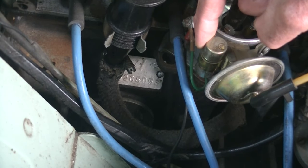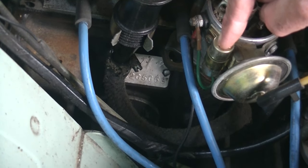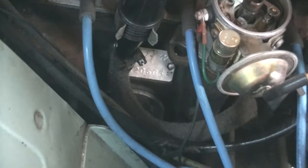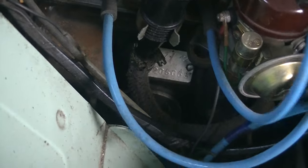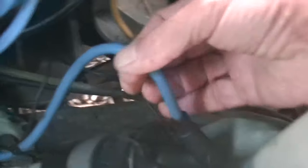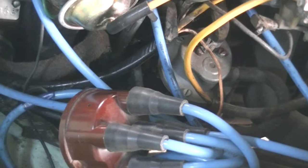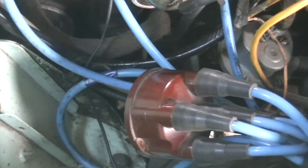It stores electricity in there until the points close again, and when it does that then it flows back into the coil through the secondary windings and gets sent out through this wire here back into the distributor and obviously goes from there to all the spark plugs, but that's the short version.